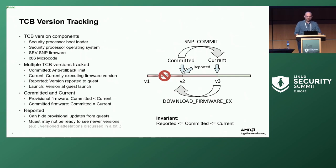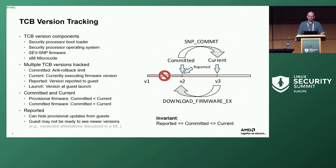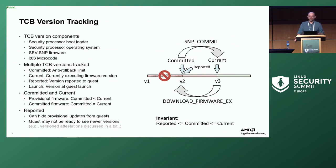The diagram describes how you move between states. If committed is version two and current is version three, to raise that low watermark you execute SNP commit, which changes the committed version. Now the guest can say it's on version three, and it isn't until that committed version low watermark goes up that the guest can start seeing secrets released by the guest owner associated with version-three trust. If we're at a provisional installation and want to roll back, the hypervisor can execute download firmware, which loads the new firmware image and sets the current version back to the committed version.